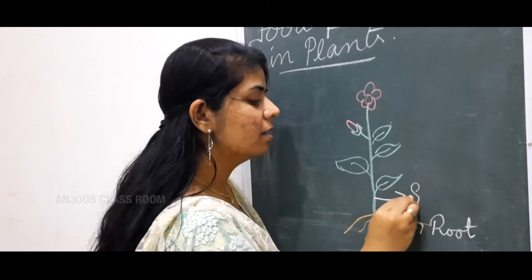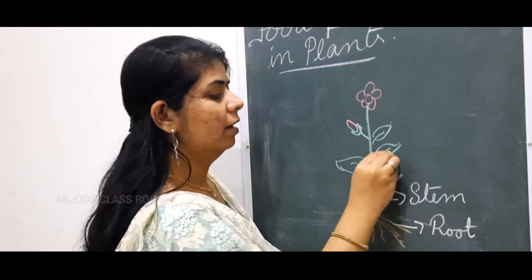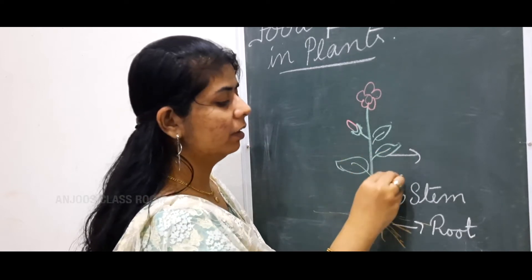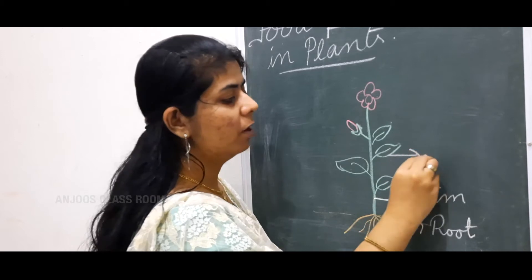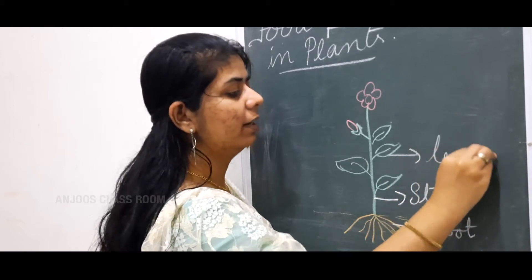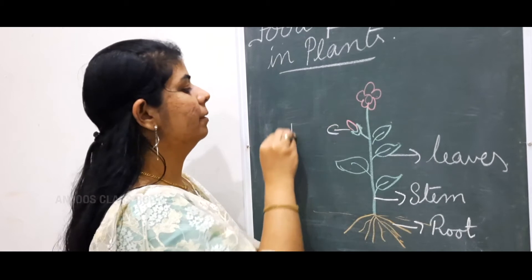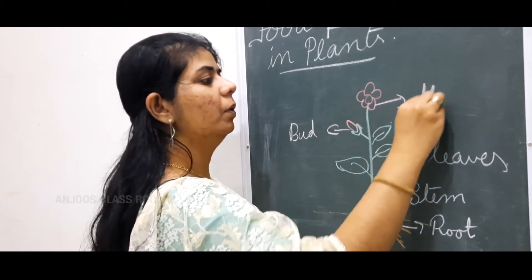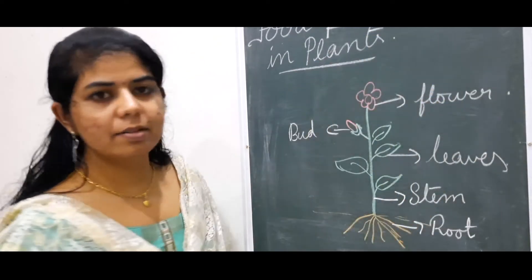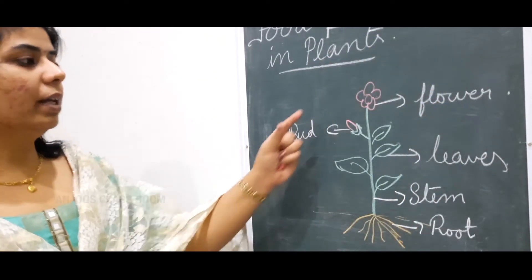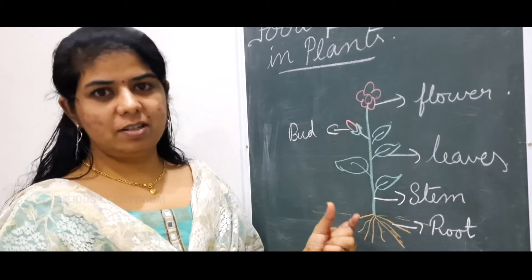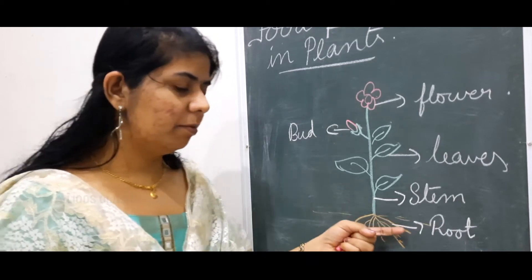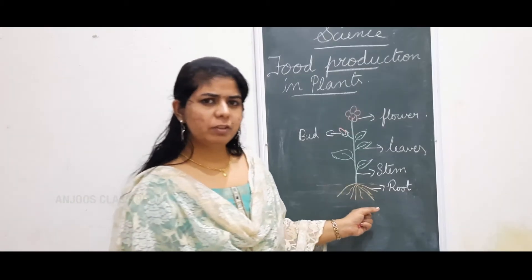This is the stem. Then if I write leaf — or together, all of them are leaves. Then this is the flower. So these are the different parts of the plant. Now, looking at these yourself, you can give me the functions — what are the different functions of the parts of the plant. First we will come to the root and see its functions.